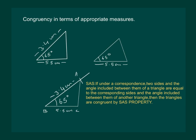Hence we state that if under a correspondence two sides and the angle included between them of a triangle are equal to the corresponding sides and the angle included between them of another triangle, then the triangles are congruent by SAS property. Thank you.